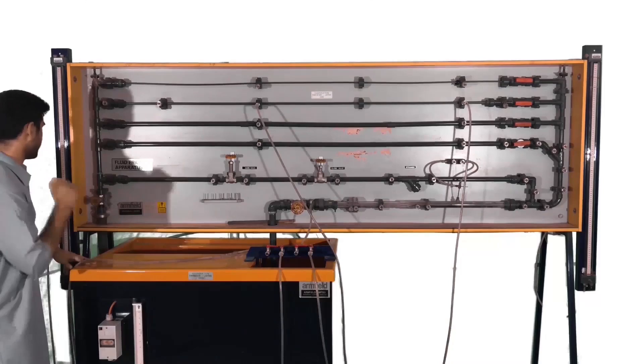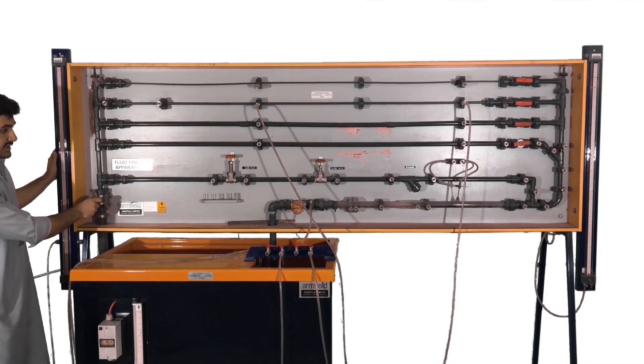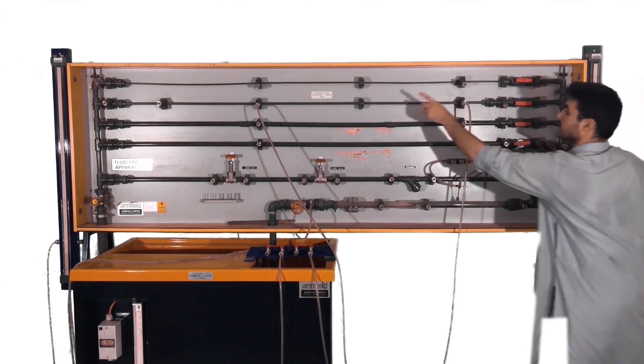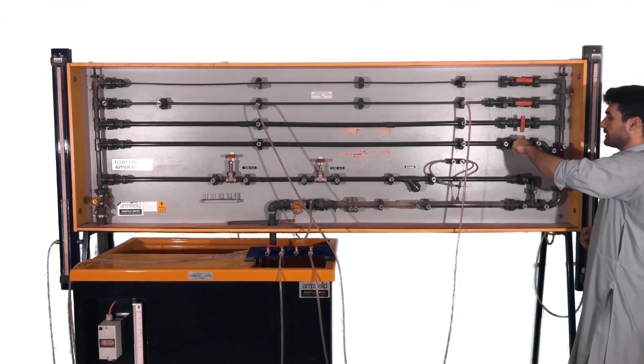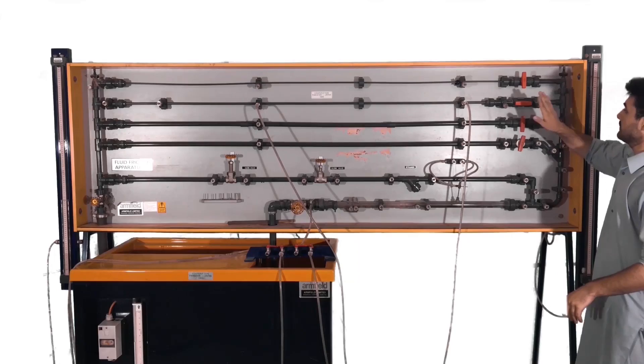Okay, we have started the hydraulic bench. And now we open the main control inlet valve, slowly, we don't want to put extra pressure into it. Now we go for our particular pipe on which we want to perform our test. In this case, we are performing our test on the second one, so we only open that valve and close the rest.